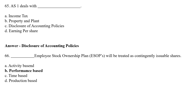Performance-based employee stock ownership plan will be treated as contingently issuable shares. Option A: Activity based, Option B: Performance based, Option C: Time based, Option D: Production based. The correct answer is Option B — Performance based.